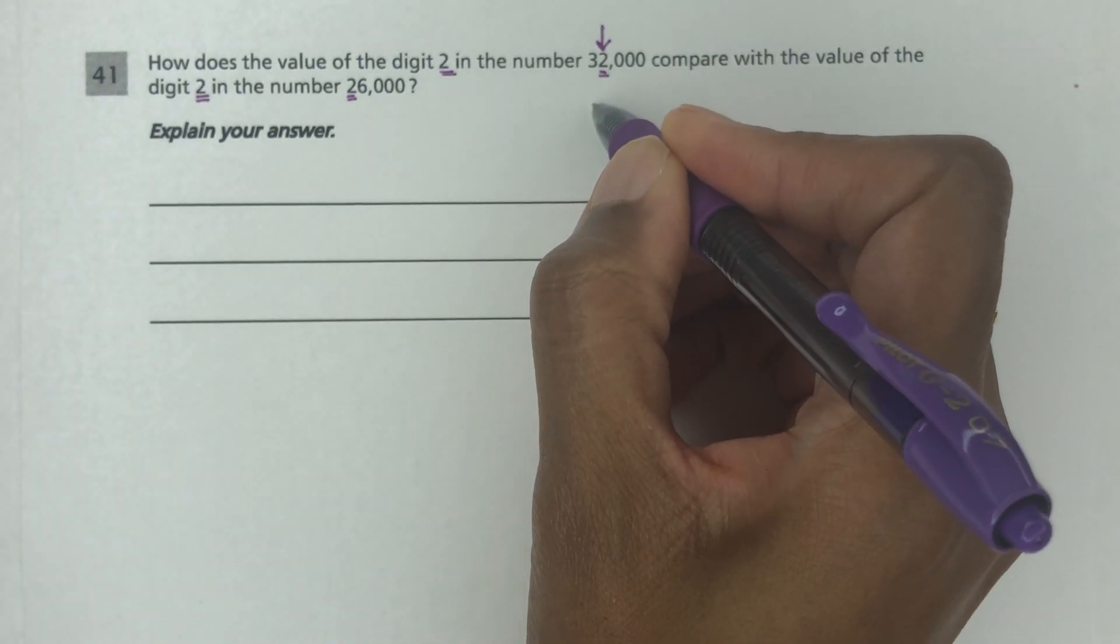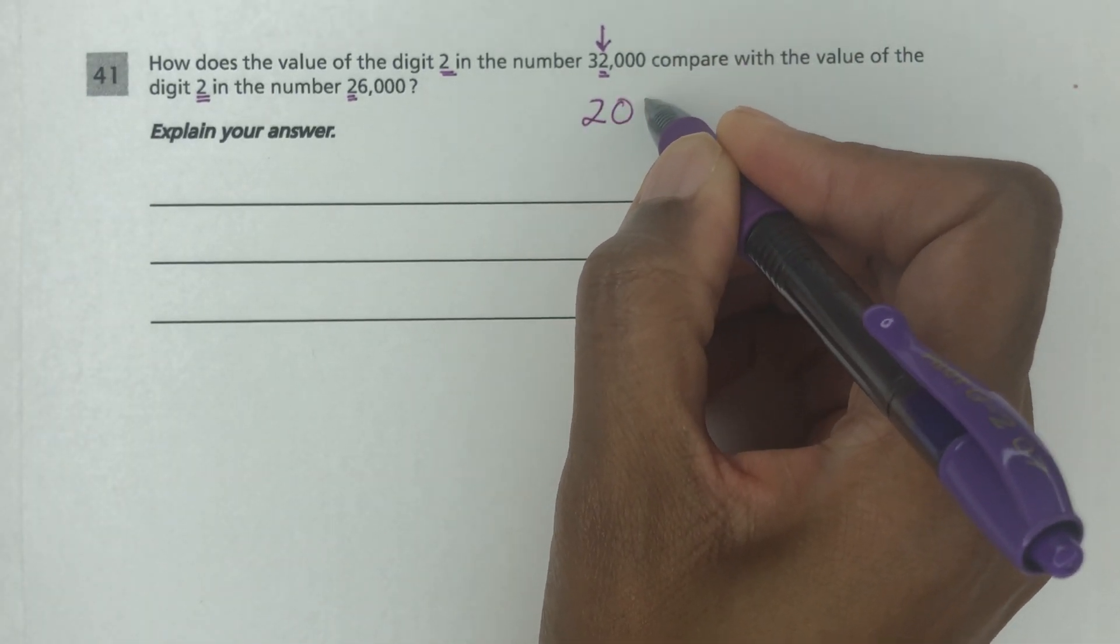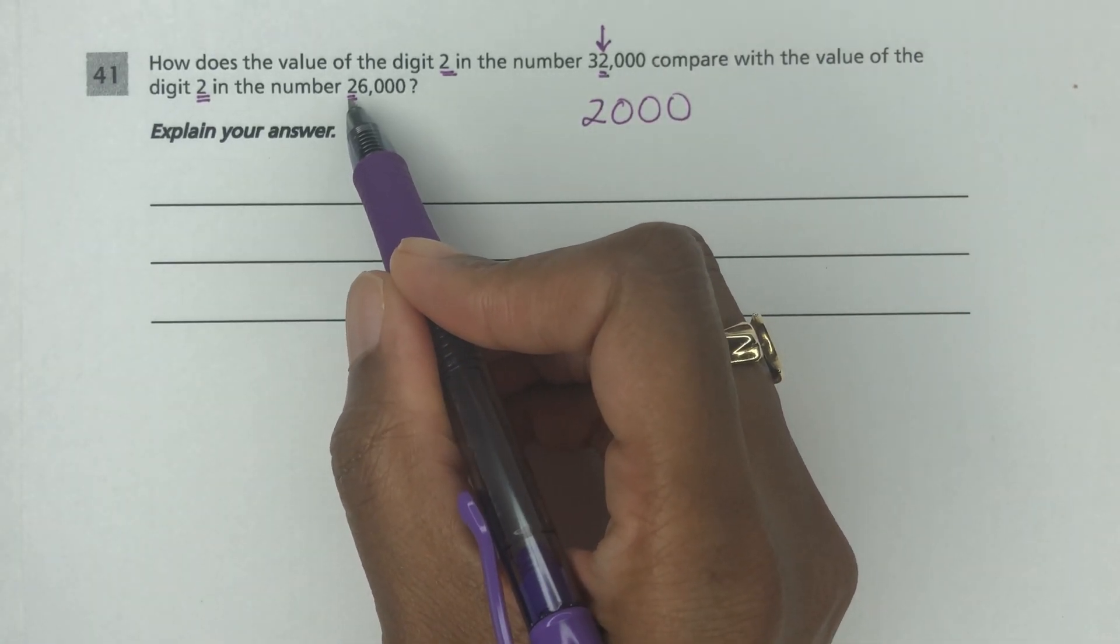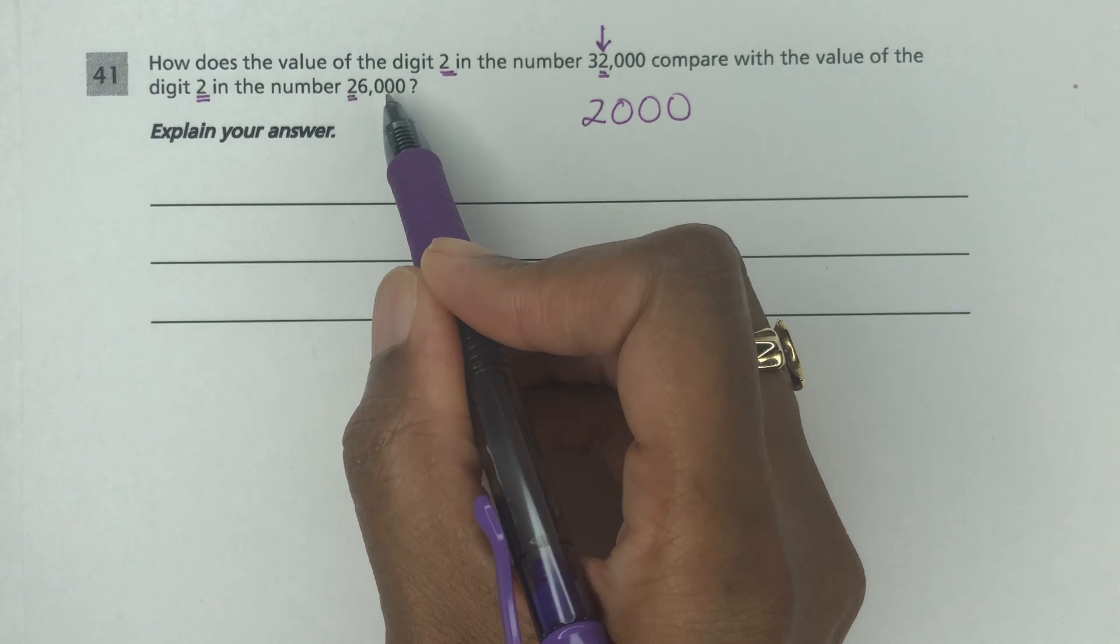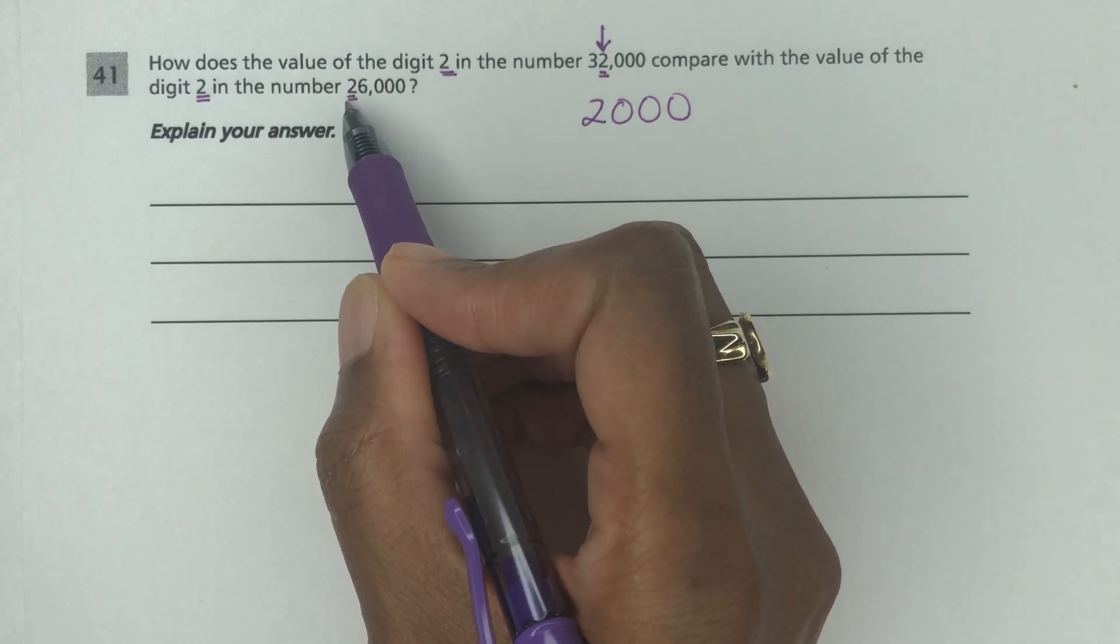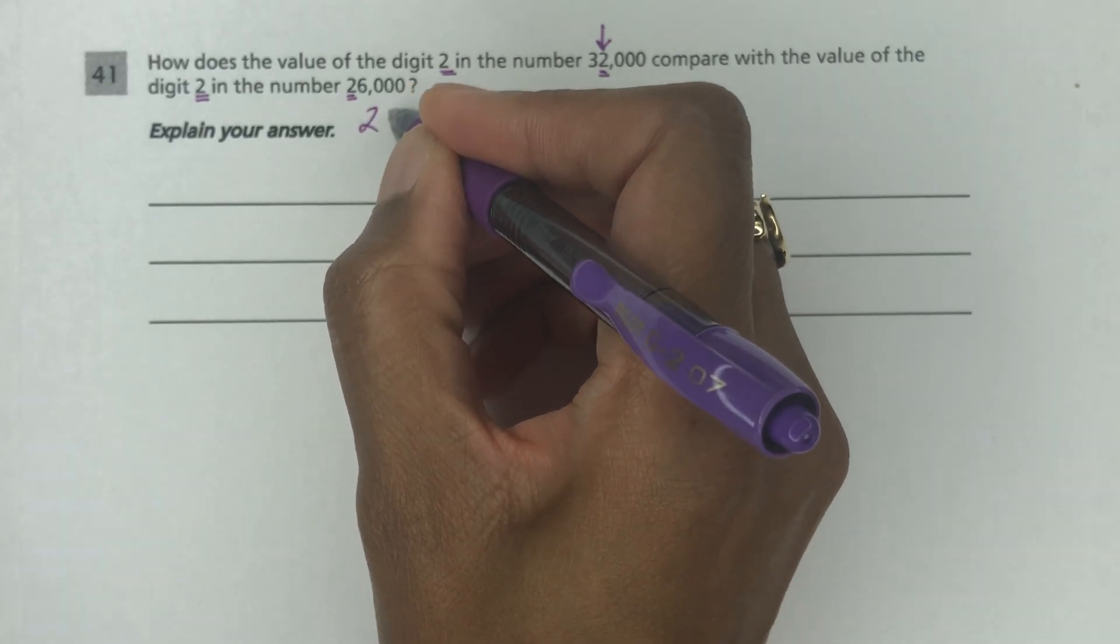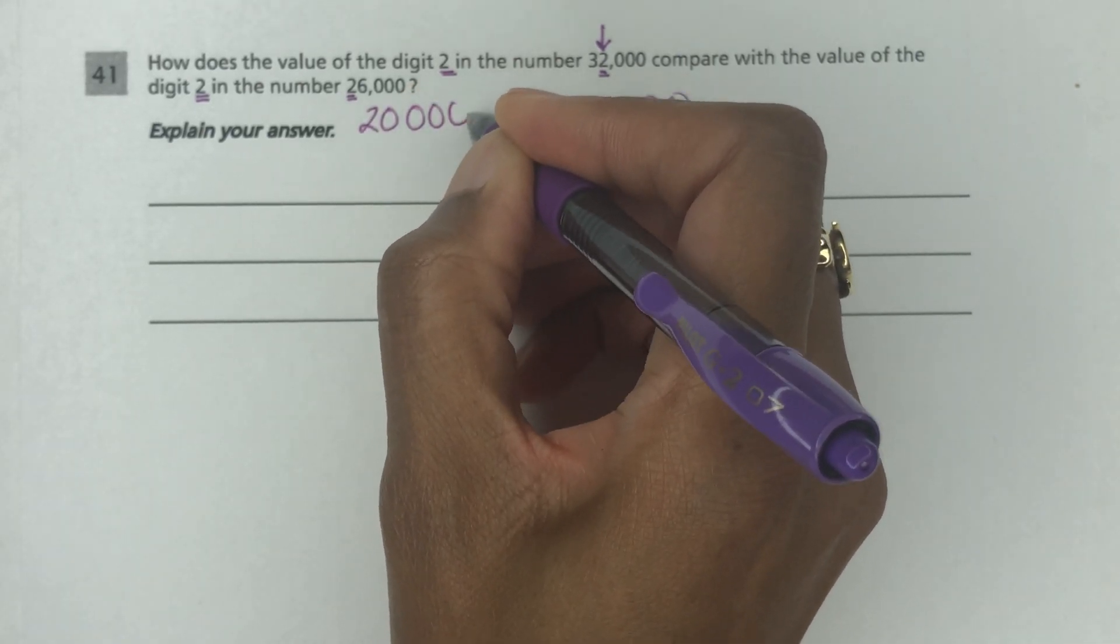In this case you say 26,000, but we're just dealing with the two. So this is 20,000 for this number here.